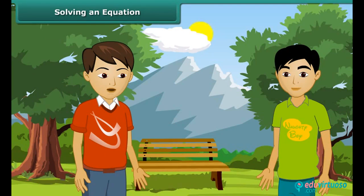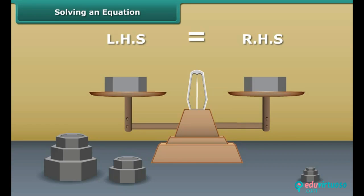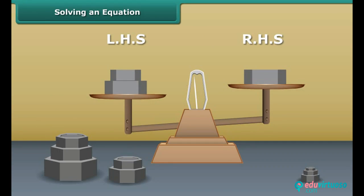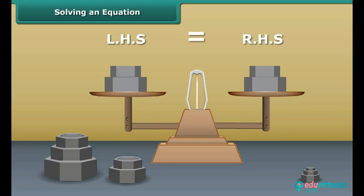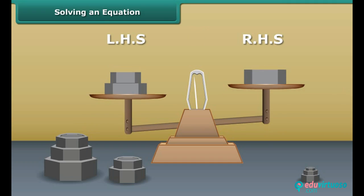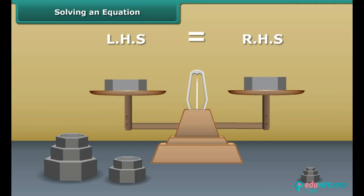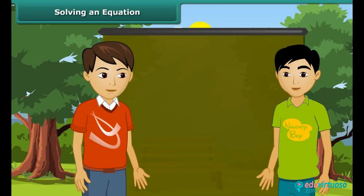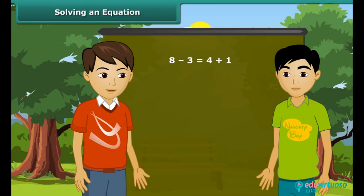How do we solve an equation? A balanced equation is like a weighing balance with equal weights on both its pans. If we add the same weights to both the pans, the arm remains horizontal. Similarly, if we remove the same weights from both the pans, the arm remains horizontal.